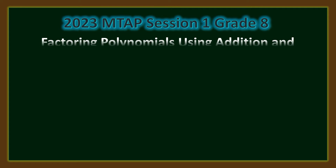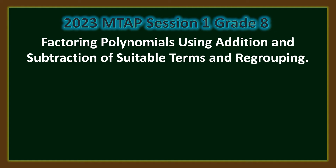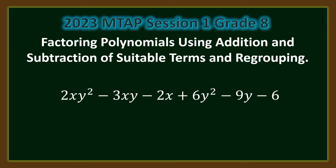2023 MTAP Saturday Session 1 for Grade 8 Students — a problem on factoring polynomials using addition and subtraction of suitable terms and regrouping. The problem is: factor completely 2xy² minus 3xy minus 2x plus 6y² minus 9y minus 6. You can approach this problem by adding and subtracting a suitable term and then regrouping so that it can be factored completely.